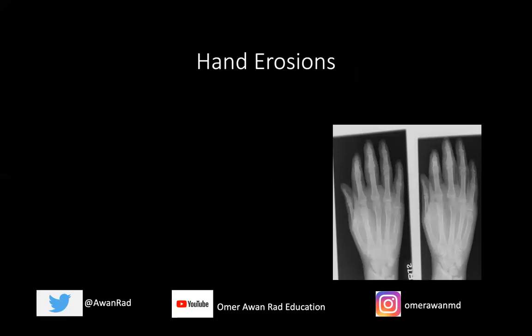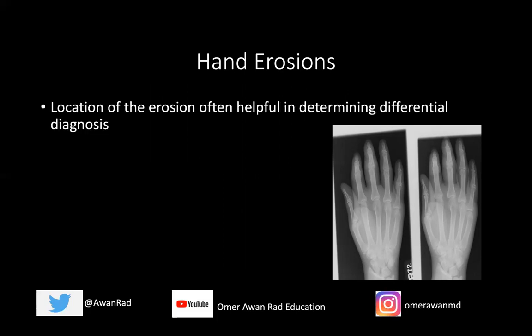I want to talk a little bit about hand erosions because it's a sometimes intimidating topic for residents when deciding what type of arthropathy they're seeing. People often talk about the location or distribution of findings. For example, gout often affects the first MTP joint in the toe, and in psoriatic arthritis it typically has a distal distribution in the PIP and DIP joints.